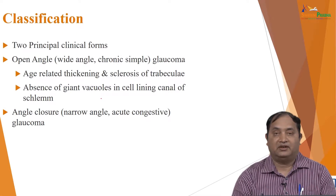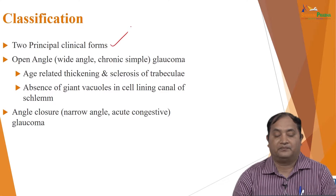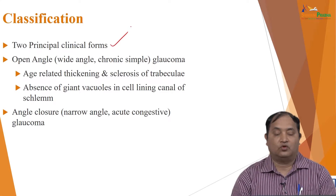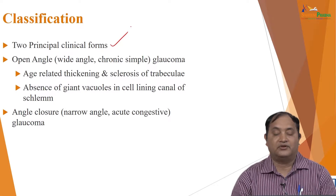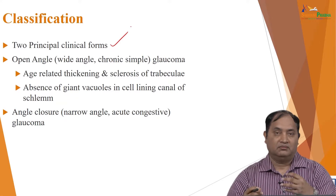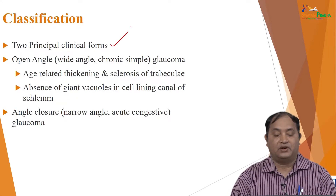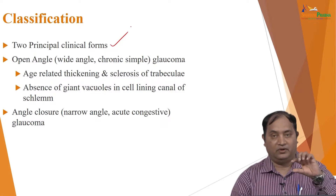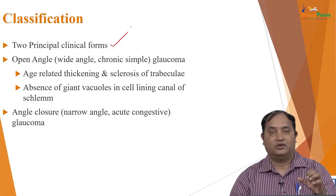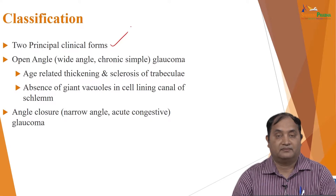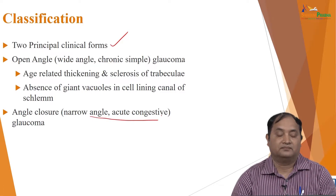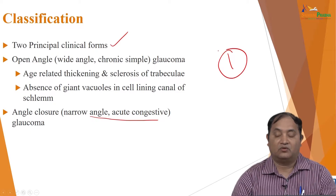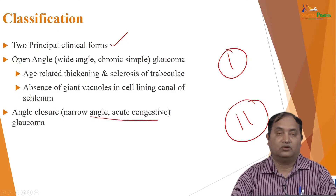Based on pathogenesis, there are two principal clinical forms of glaucoma. One is open angle glaucoma — also called wide angle or chronic simple glaucoma — which is age-related, involving age-related thickening and sclerosis of the trabecular meshwork, so aqueous humor is formed but there is no drainage. The second form is angle closure glaucoma, which is narrow or acute congestive glaucoma. So there are two types: open angle glaucoma and closed angle glaucoma.